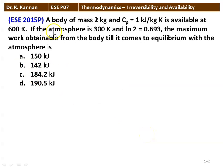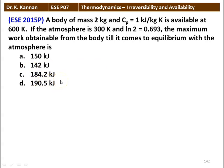The next question: a body of mass 2 kilogram and CP equal to 1 kilojoule per kilogram Kelvin is available at 600 Kelvin. If the atmosphere is 300 Kelvin and ln(2) equals 0.693, the maximum work obtainable from the body until it reaches equilibrium with the atmosphere is — options: 150, 142, 184.9, 184.2, or 190.5 kilojoules. The answer is 184.2 kilojoules.